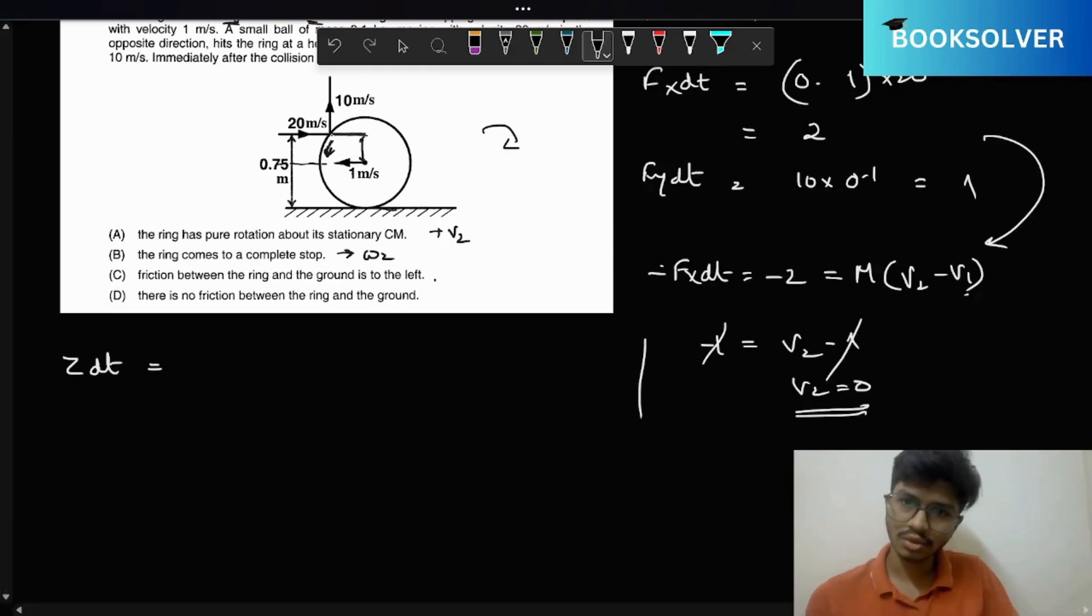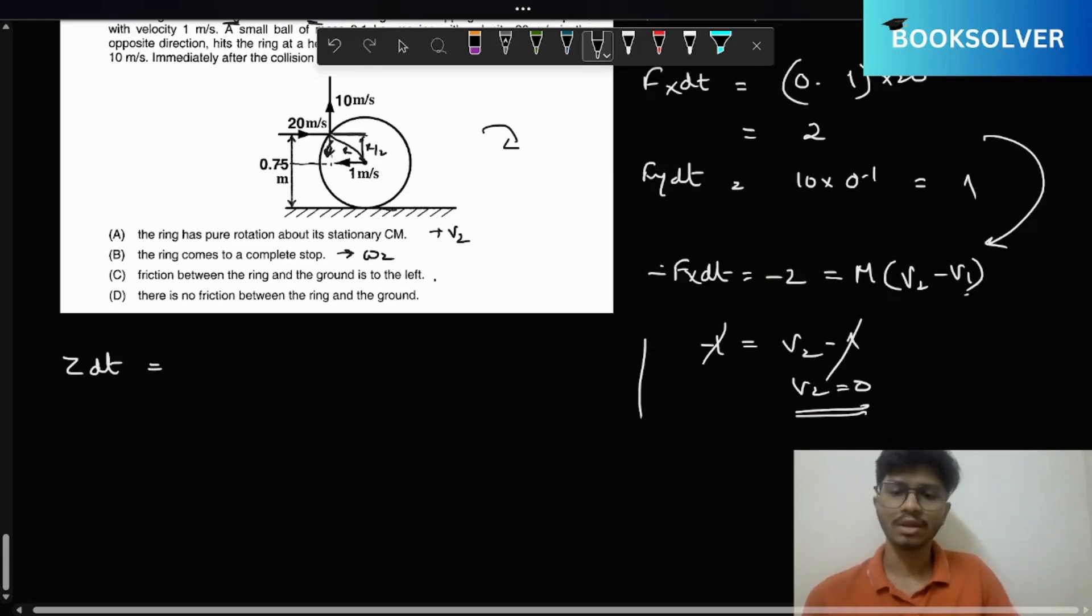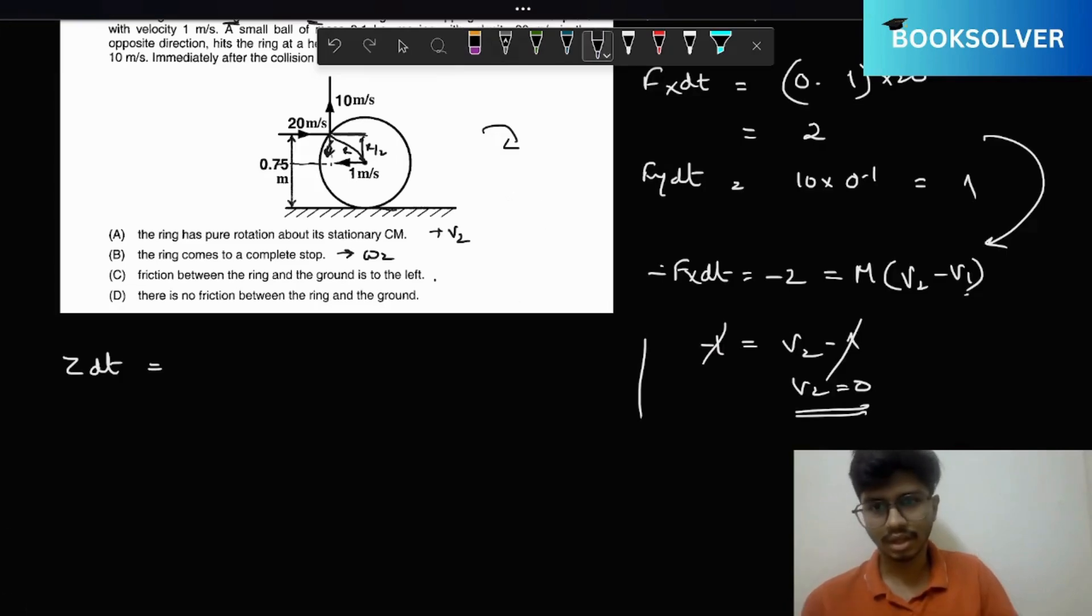If this is one, this is r, this is r by 2. You can use the Pythagorean theorem: it will be square root of r squared minus r squared by 4, which is root 3 r by 2. So this is root 3 r by 2.